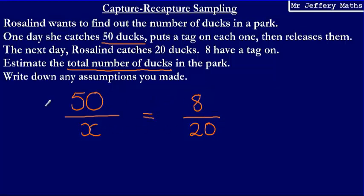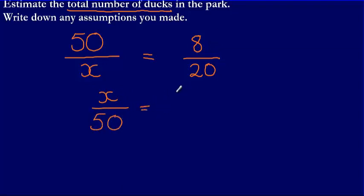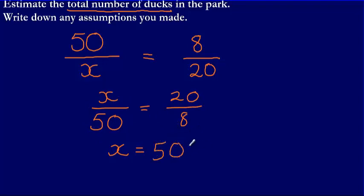So I can equate these and then solve this equation: 50 over X equals 8 over 20. When we've got two fractions equal to each other and the unknown is on the bottom, we can flip both fractions upside down to make it easier to solve. So X over 50 equals 20 over 8. Then to solve this, we multiply both sides by 50, giving us X equals 50 multiplied by 20 over 8.